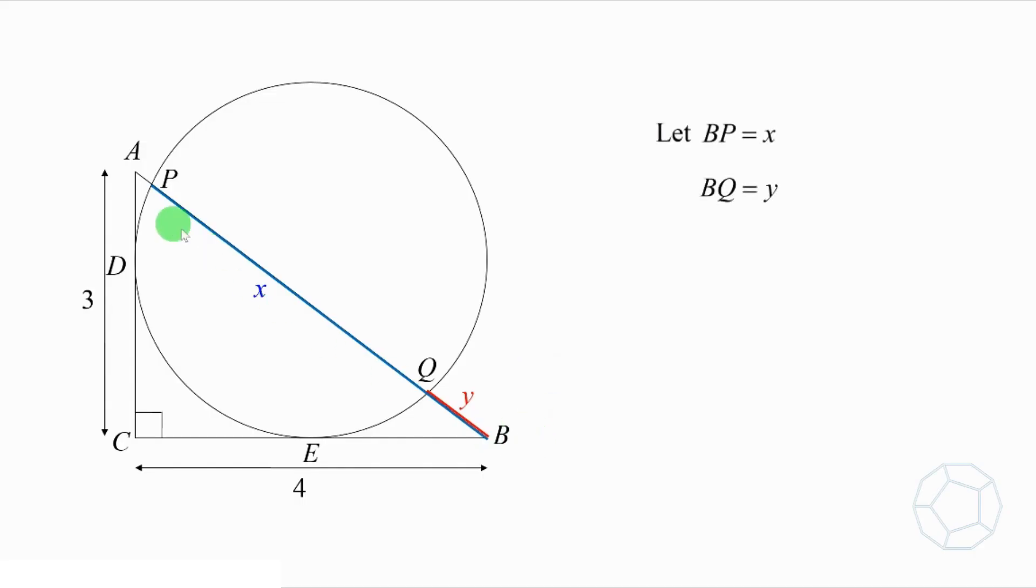Let BP equals to X and BQ equals to Y. Therefore, the length of the chord PQ is equal to X minus Y. We are going to use a really important theorem of circle. It is called the tangent secant theorem. Let's take a look at that.